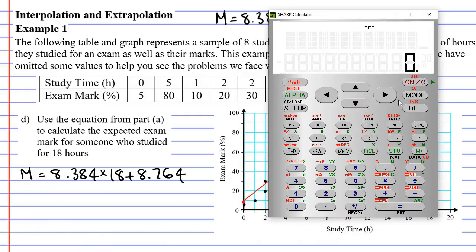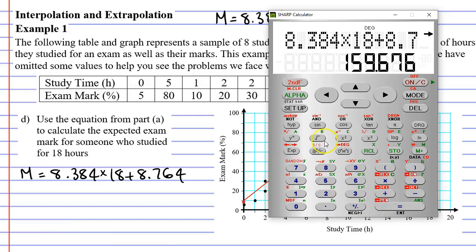8.384 times 18 plus 8.764. And that comes out to if we round it to a whole number of 160.